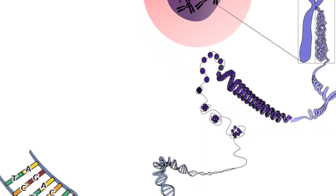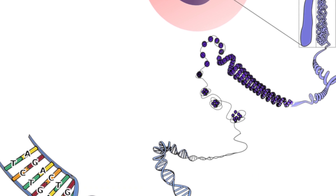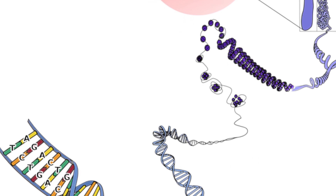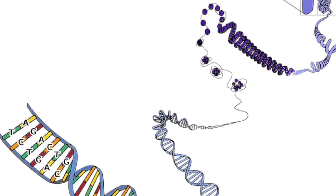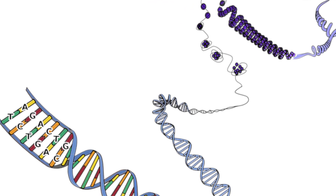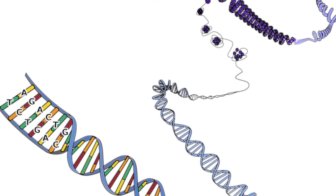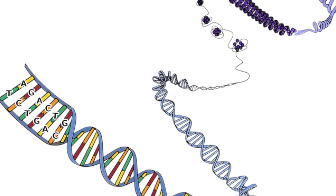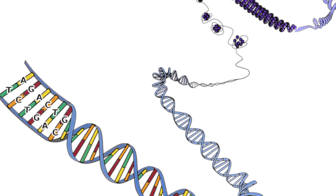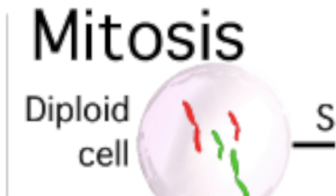New cells are needed in an organism to replace damaged cells. However, this new cell has to be identical to the previous cell so that it can have the same function. So in order to produce two identical cells, there is a process called mitosis.